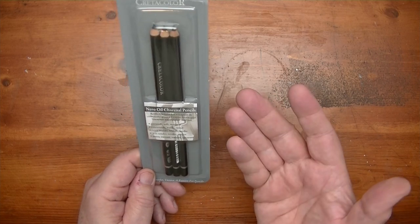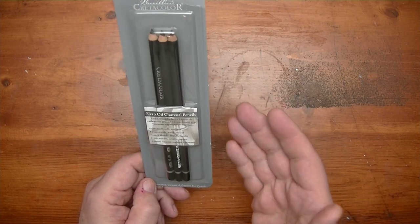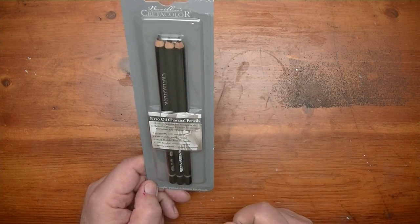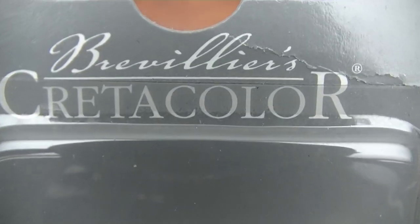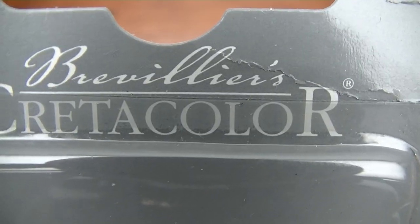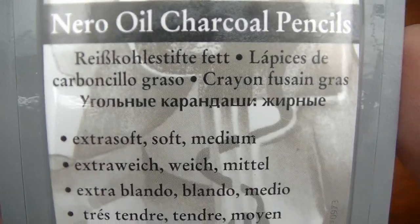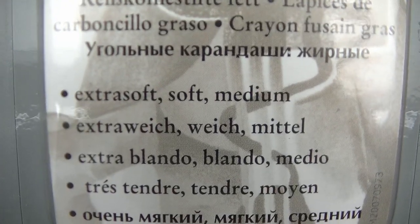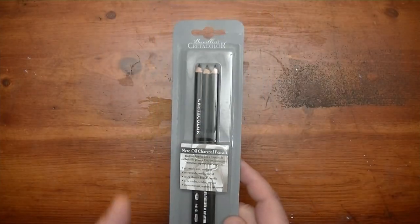Now we're going to take a look at the package first. We'll look at the front, back, all that good stuff. And then we got to figure out how we're going to compare it to. So let's take a close look at this. It says Brevalier's Cretacolor, and it's a Nero oil charcoal pencil. So apparently these are charcoal pencils that got a little bit of oil in it. I'm sure that would make it smoother, but on the other side, probably a lot harder to get off.